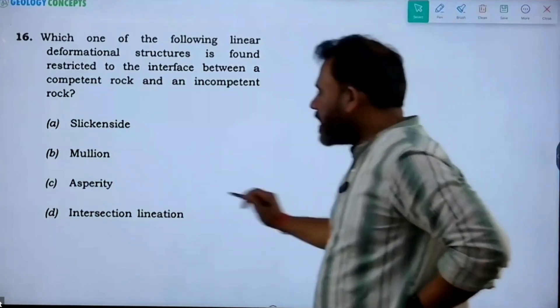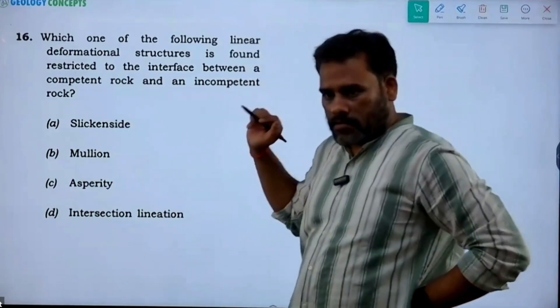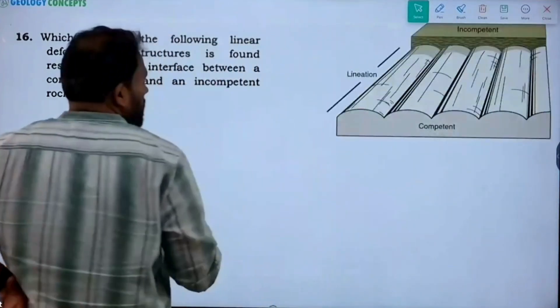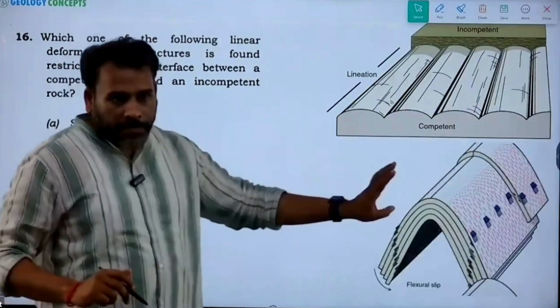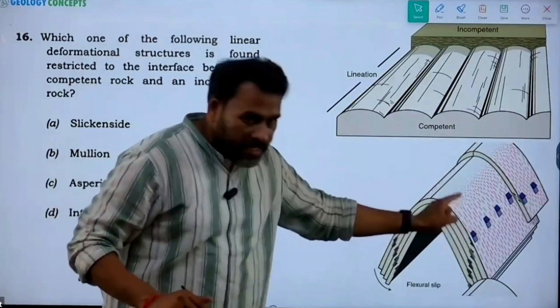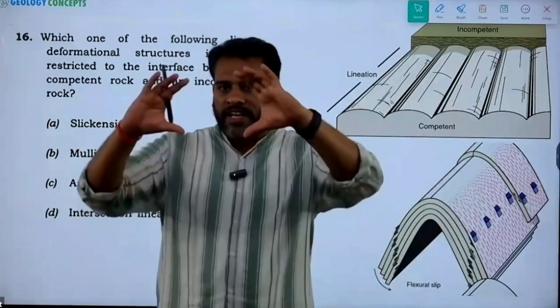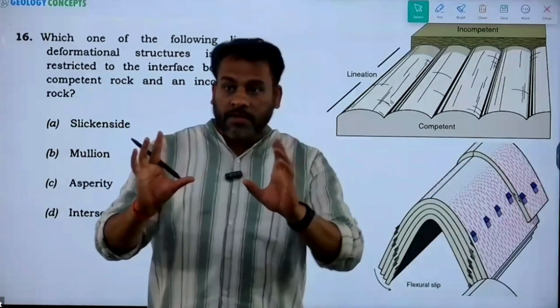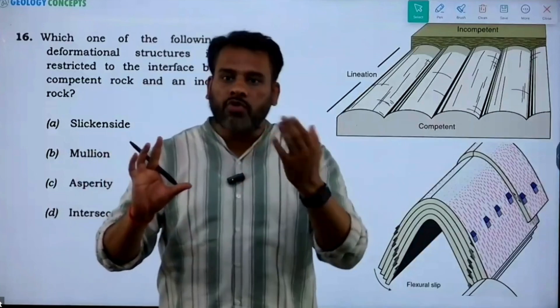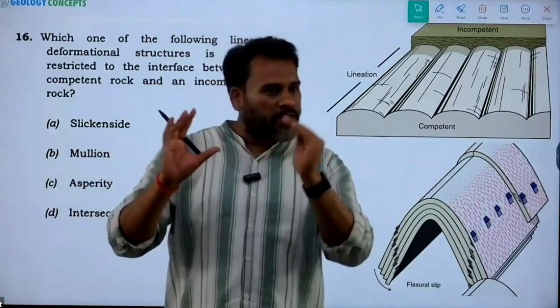Now, if we consider slickenside or slickenline, this is also a linear feature and this is also a linear feature. If you talk about flexural slip, mechanical anisotropy is strong, that means there should be competent and incompetent, right?